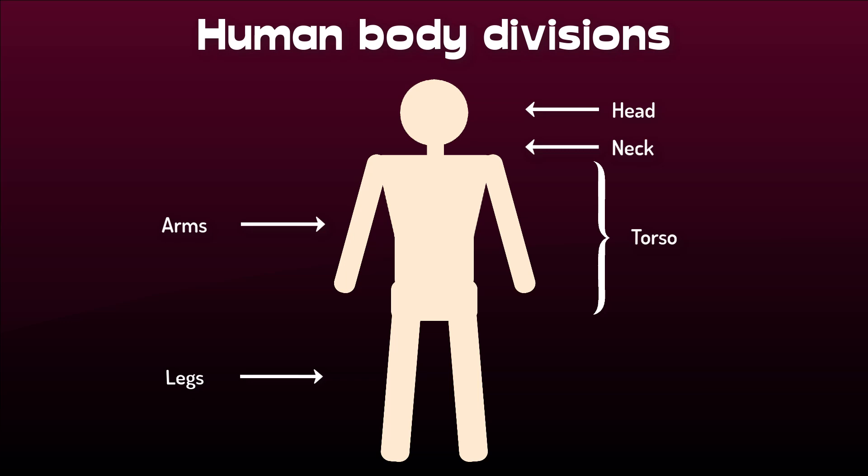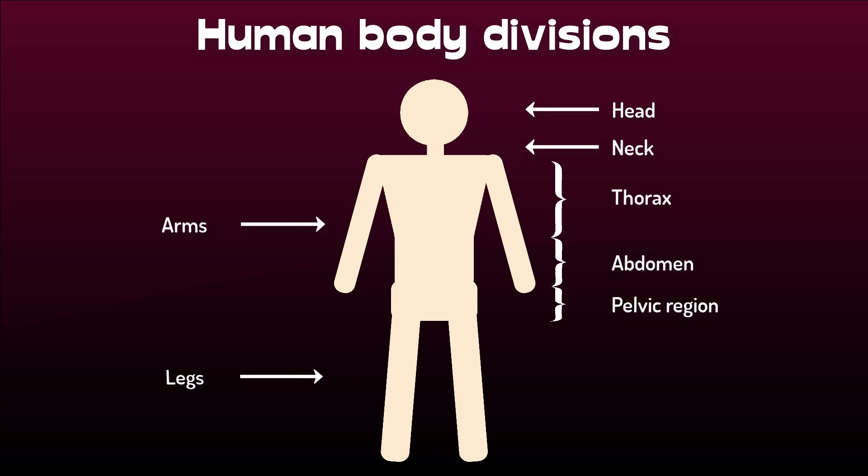The torso itself can be roughly divided into the chest or thorax, the abdomen, and the pelvic region. Each division holds specific organs and can more or less be said to have its own general function or set of functions.